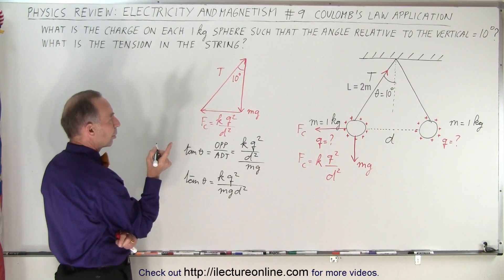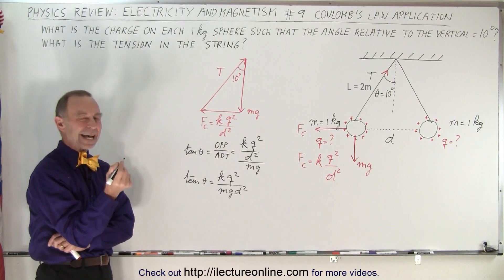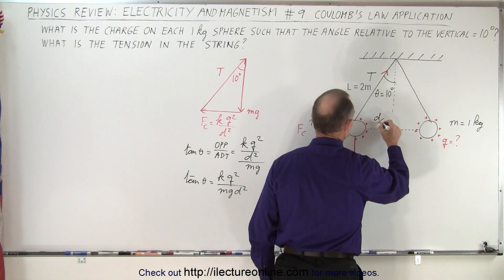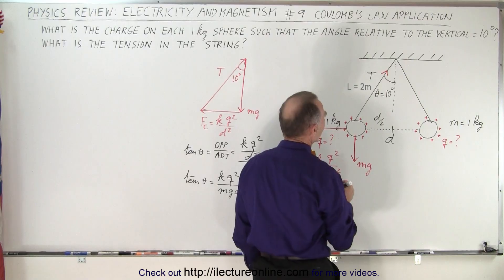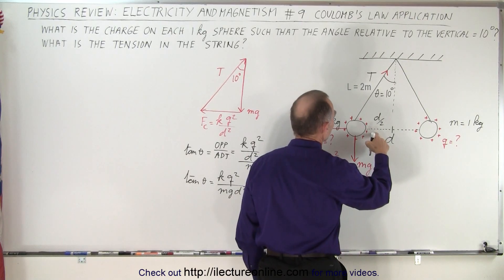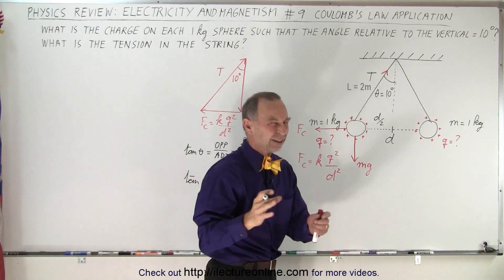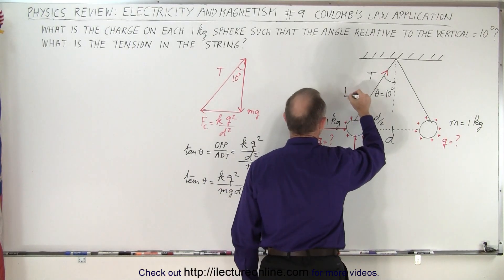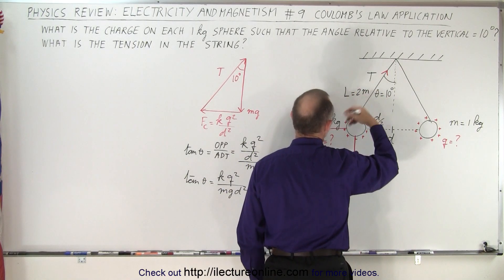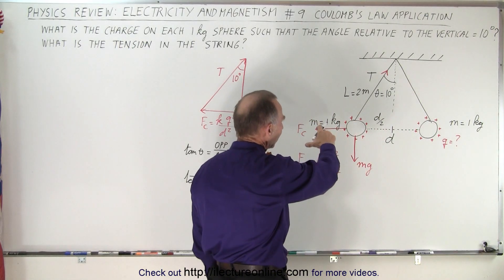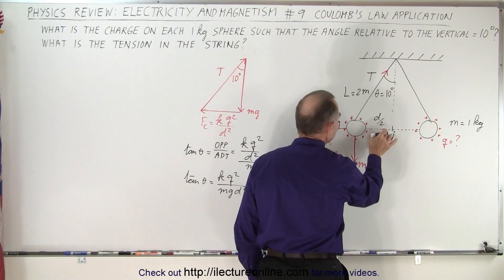But now we have a problem. We don't know D, at least not yet. But what we can then do is say, well, if we take half of that and call this D divided by 2, we then realize that D divided by 2 is equal to, oh, we need to know the length. I didn't give you the length yet, so let's throw a length in there. Let's say the length of the string is equal to 2 meters, because if we don't know the length, then we can't solve the problem. So now that we have the length and we need to find D.